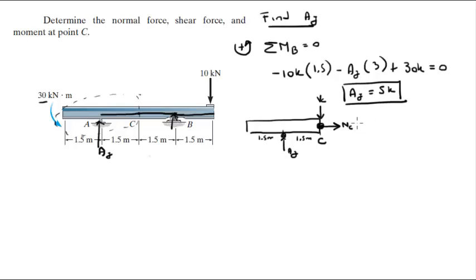So you know that to find VC, the sum of the forces in the y direction is equal to zero, assuming this orientation. So VC is going down, so it's minus VC plus AY is equal to zero. But we already have AY at 5 kN, so VC is equal to 5 kN.